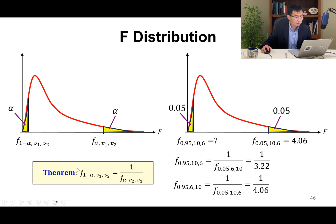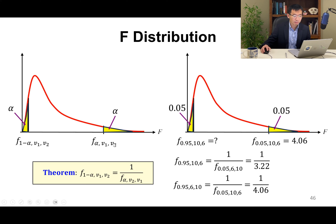There is a theorem of the F distribution. If F_alpha with degrees of freedom V1 and V2 has area alpha in the right tail, then the corresponding left-tail value is F_{1-alpha} with V1 and V2. So at the right-tail location it is 1 - alpha with V1, V2, and at the left-tail location it is alpha with V1, V2.